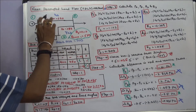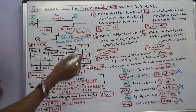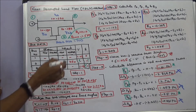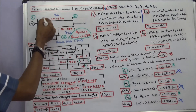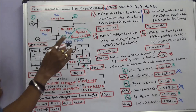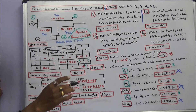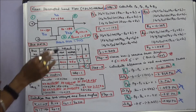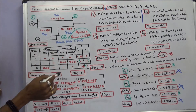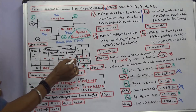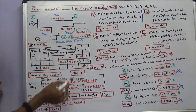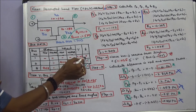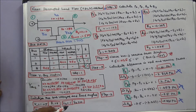In this class we work out one problem on the fast decoupled load flow method. The given power system network is a 3-bus system. Bus 1 is a slack bus with voltage V1 equal to 1.05 per unit and delta 1 equal to 0.